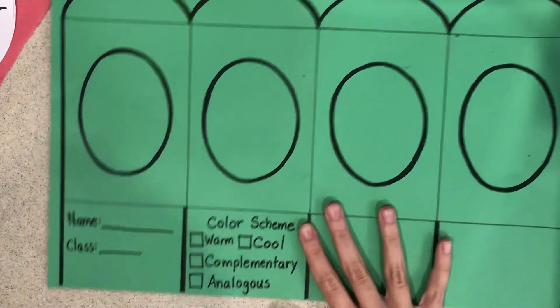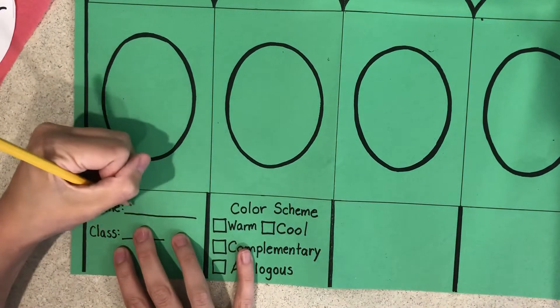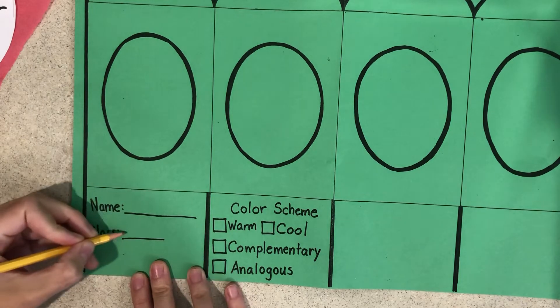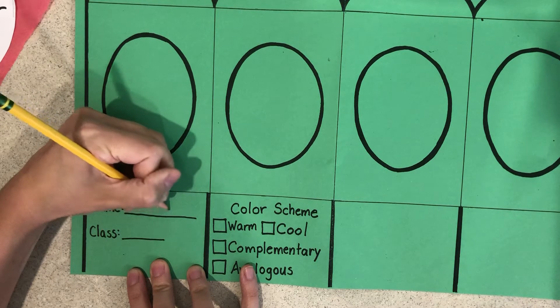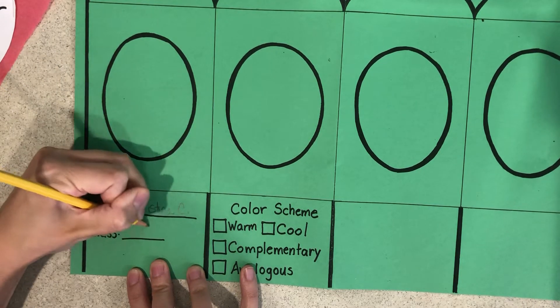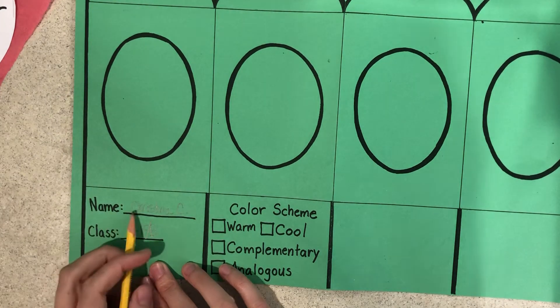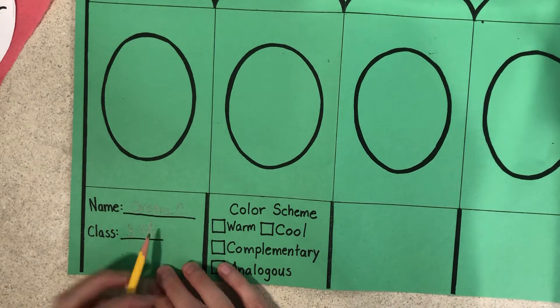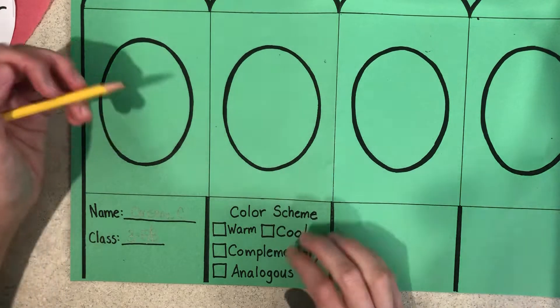The first thing I want you to do before you do anything else is write your name and your class code on this line. Go ahead and write them nice and bold. I'm pretending that I'm a kid named Christina C and I am in 3FB. Please write nice and bold and dark so that it shows up.